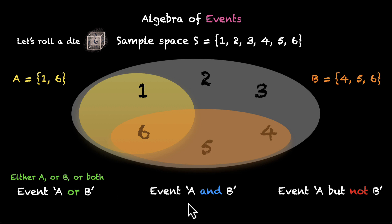What about this event A and B? Well, this one is a little bit strict. This event says, I need both A and B to happen, which means both of them have to happen together.